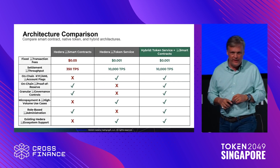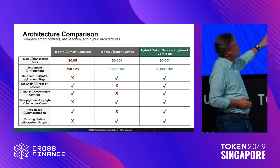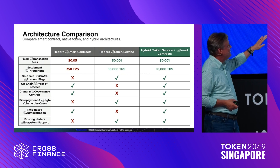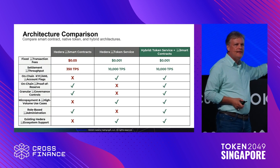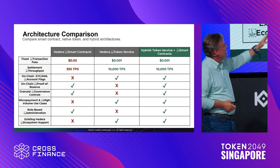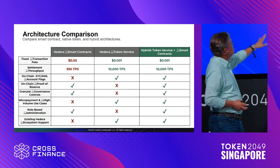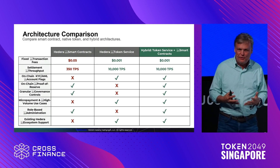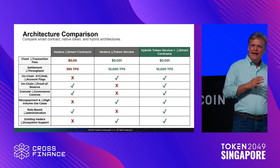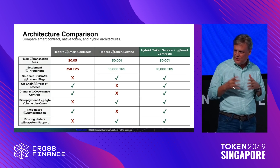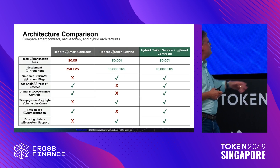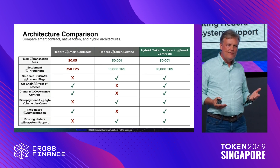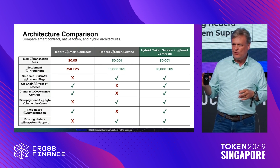You get the advantages of programmability with the smart contract service on Hedera, combined with the performance and cost structure of the native token service. You get the best of both worlds. For example, on-chain proof of reserve — smart contract. Granular governance controls — smart contract. Role-based administration — smart contract. On the other side, using the Hedera token service, you get on-chain KYC and AML features, and you get micropayments — because of the cost structure and high throughput we can process in terms of token transfers. And you get the existing Hedera ecosystem support. The combination gives you all you need for a robust, high-end stablecoin solution.